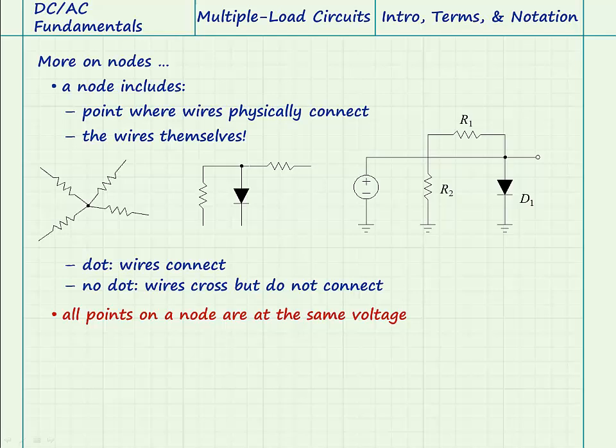A very important characteristic of a node is that all the points in the entire node are at the same voltage. For this reason, a node is often referred to as an electrical point, as a reminder that the electrical properties of the node are much more important than any specific location on the node. Also, this means that the voltage at a node can be measured at any point on that node.